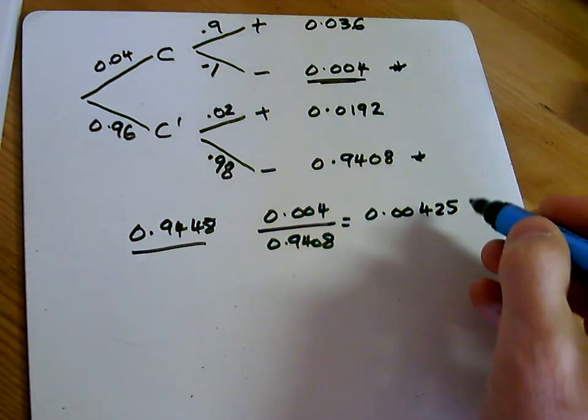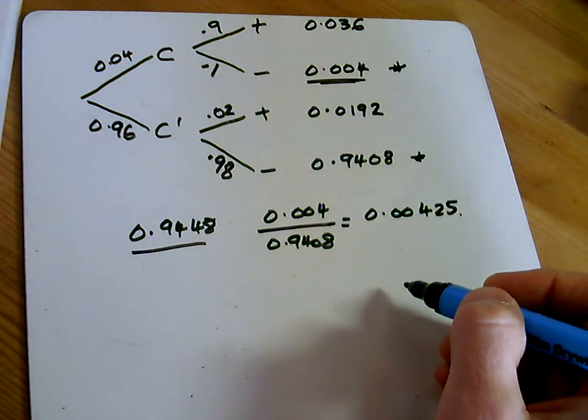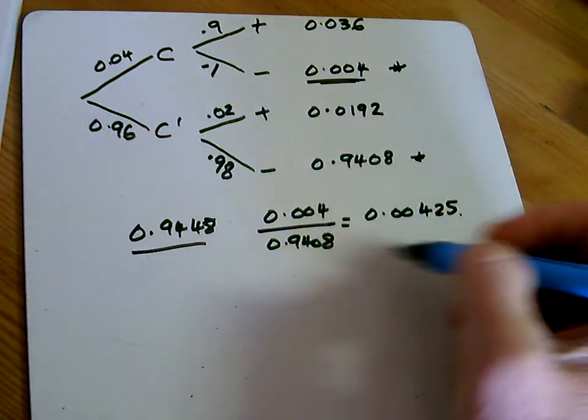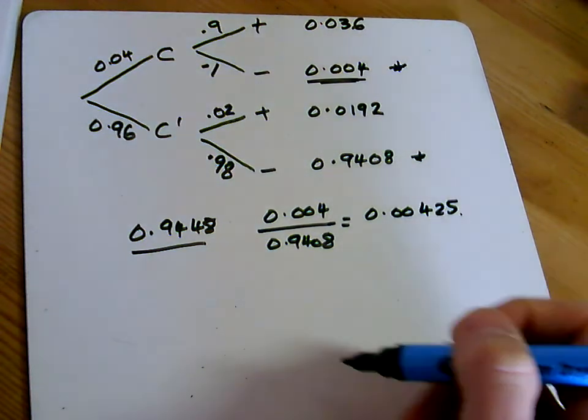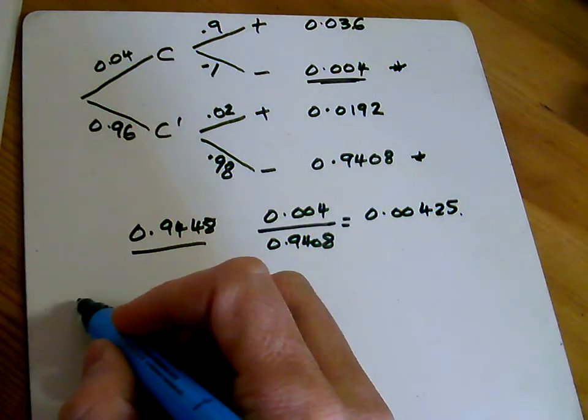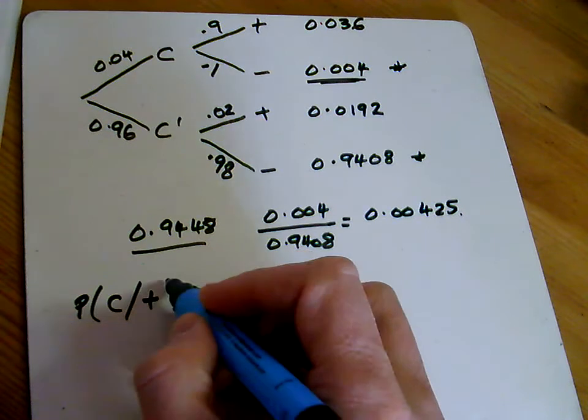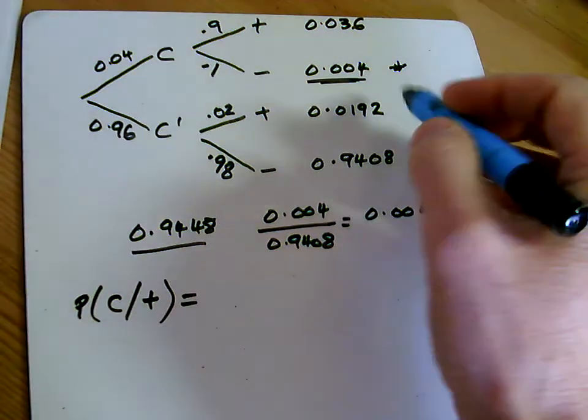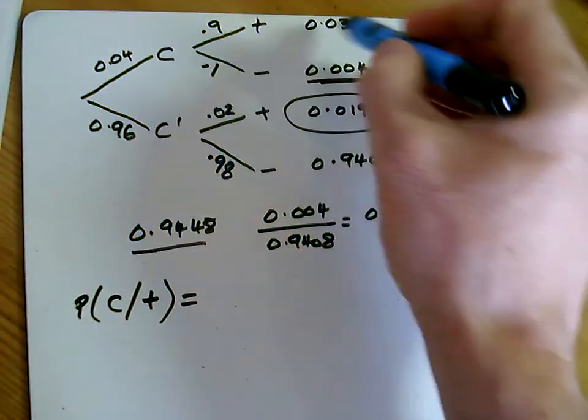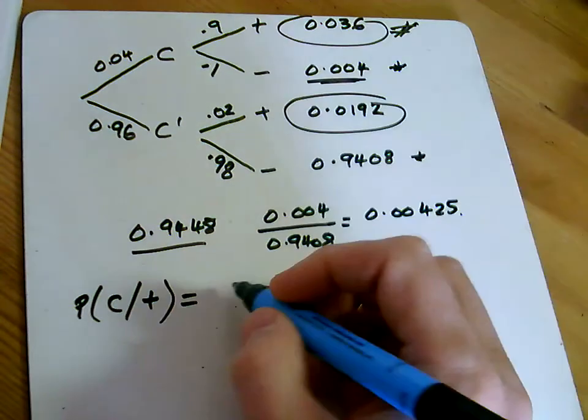So if you test negative, you're really unlikely to have it. Commenting on the effectiveness of the test. Well, it's really good at identifying people that don't have it. Let's just do that the other way around as well. What's the probability of having the condition given that you test positive? So given that you test positive, that's that one and that one. And the probability that you have the condition is we want that one.